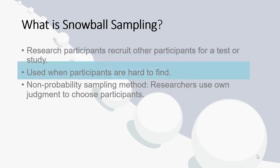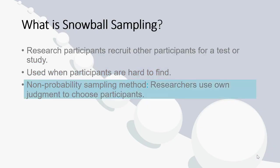It's used where people are hard to find, and it is a non-probability sampling method. It doesn't have the probabilities involved with, say, simple random sampling, where the odds are the same for any particular participant being chosen. Rather, you'll use your own judgment to choose participants.